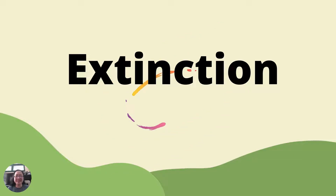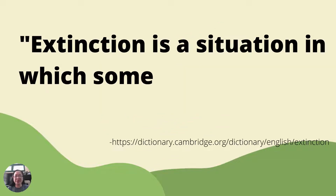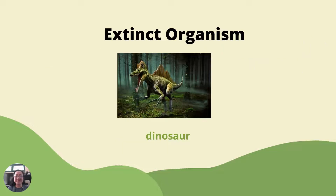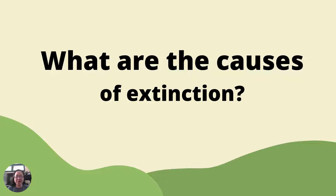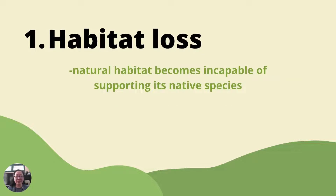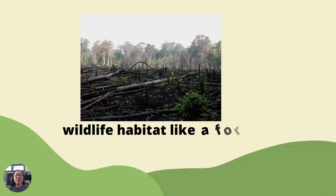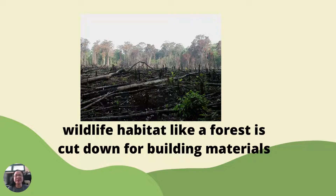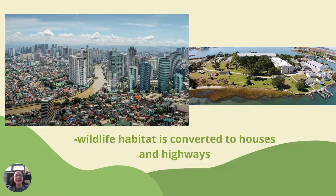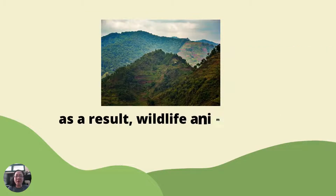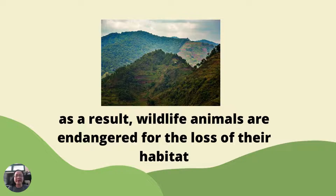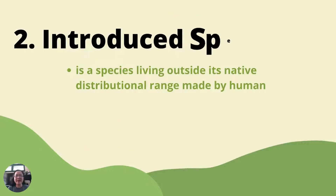Let's talk about extinction. Extinction is a situation in which something no longer exists. One cause of extinction is habitat loss, where a natural habitat becomes incapable of supporting its native species. As human population and consumption increase, wildlife habitats like forests are cleared for building materials, and wildlife habitats are converted to houses and highways. As a result, wildlife animals are endangered due to the loss of their habitat.